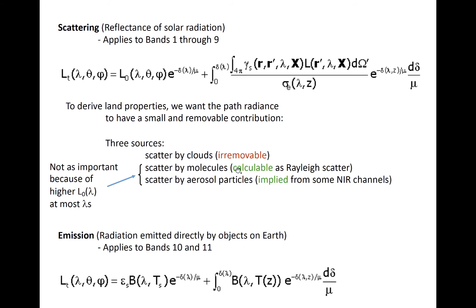However, aerosols and air molecules also cause scatter, especially of blue and violet light. Both of these effects can be estimated to correct observed reflectances to a value more representative of the true surface properties. This is important when making RGB true color imagery.